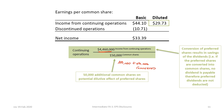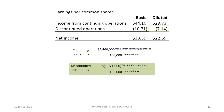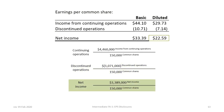This results in diluted EPS on continuing operations of $29.73. Next is diluted EPS on discontinued operations, calculated as the loss on discontinued operations of $1,071,000 divided by the 150,000 common shares, resulting in a negative EPS of $7.14. Finally, diluted EPS on net income is calculated as $29.73 less $7.14, giving us $22.59 diluted EPS on net income. This can also be confirmed by taking net income of $3,389,000 divided by 150,000 common shares.